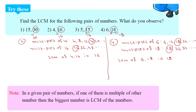We can observe that if one number is a multiple of the other number, then the biggest number is the LCM of those numbers.